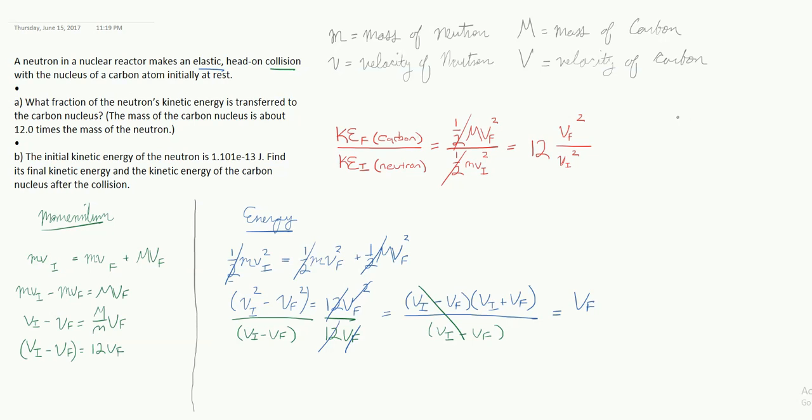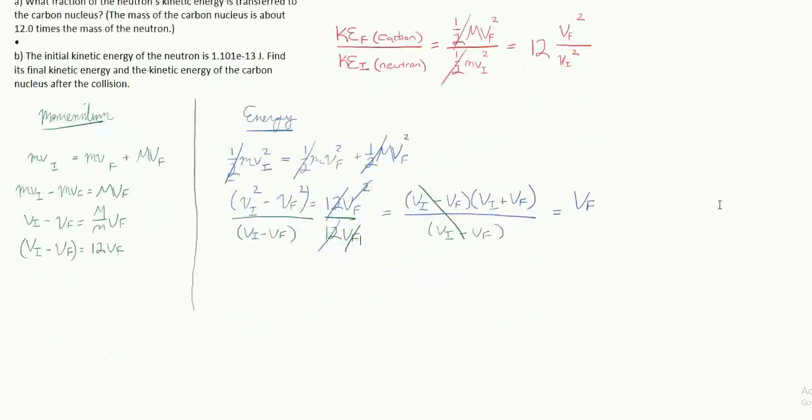Alright, so now that means, let me scroll down a little bit, we've got two equations, two expressions that are both true. Alright, so the first is going to be this one, vi minus vf equals 12 Vf. I really should make sure and make it clear that these are lowercase. So lowercase vi minus lowercase vf.